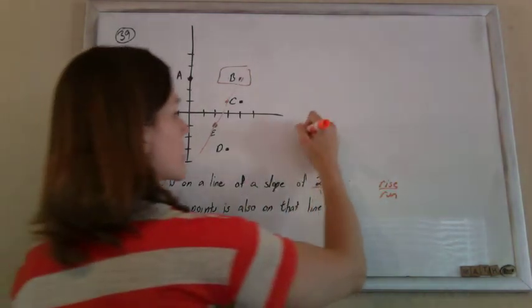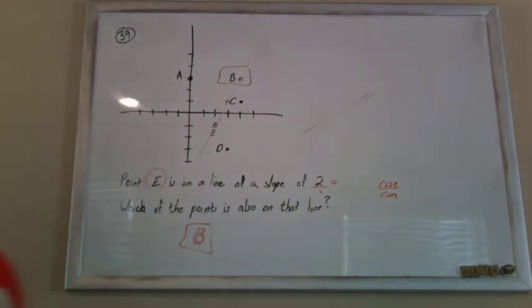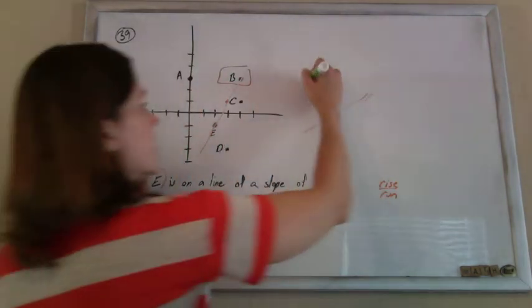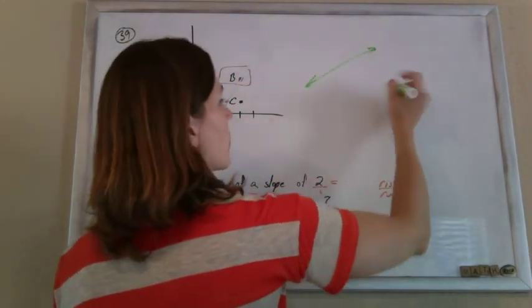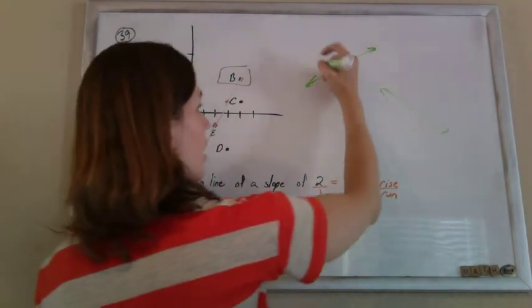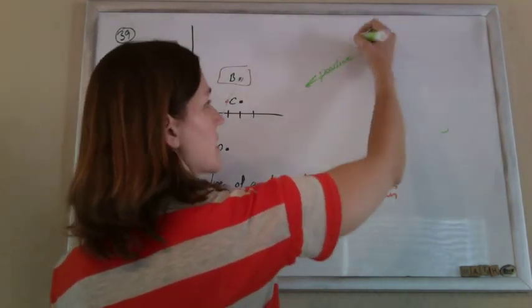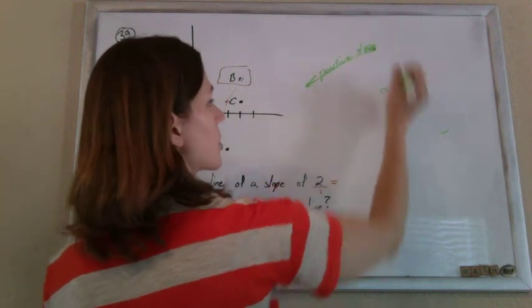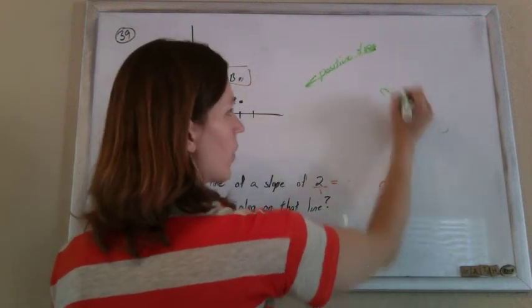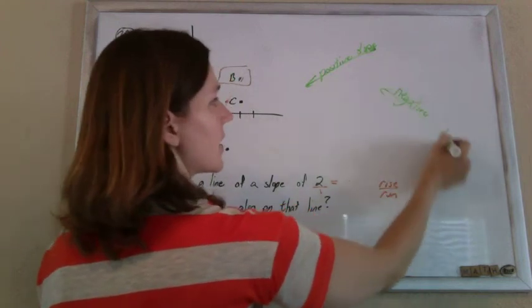Another great thing to know about slope is positive versus negative slope. So no matter where it is on the graph, if it's going up, if you were to write on the line and your letters are slanted up, this is a positive slope. And if it's going down, if you were to write on the line and your letters are slanted down, this is a negative slope.